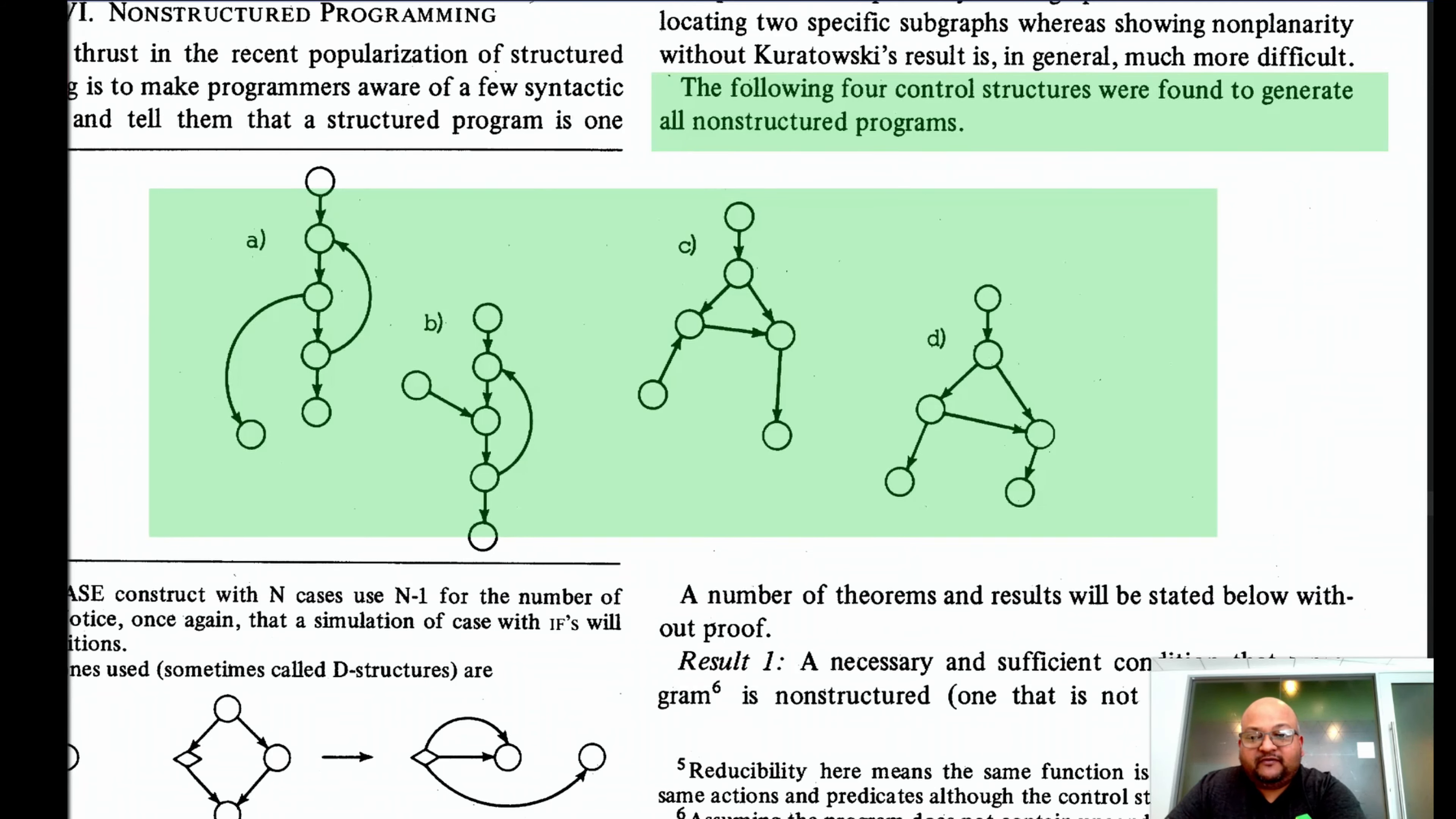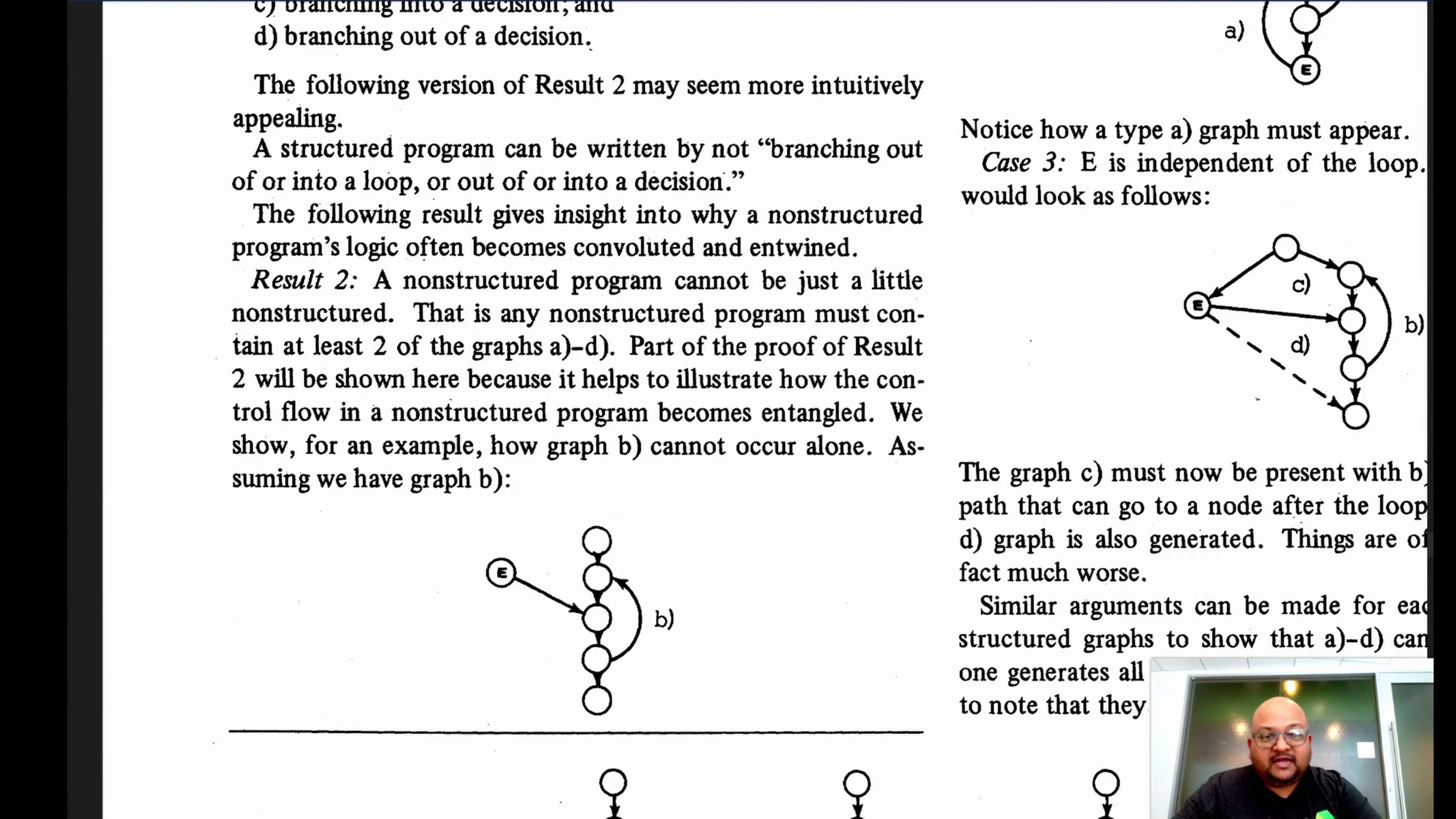But these correspond to four very common unstructured patterns. So the first one, this is branching out of a loop. This one is branching into a loop. This is branching into a decision. And this is branching out of a decision. And if you take the contrapositive of that, you arrive at the conclusion that you can write a structured program by simply not branching in or out of a loop or in or out of a decision.